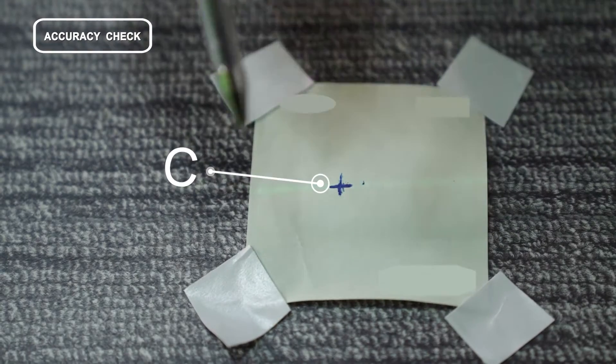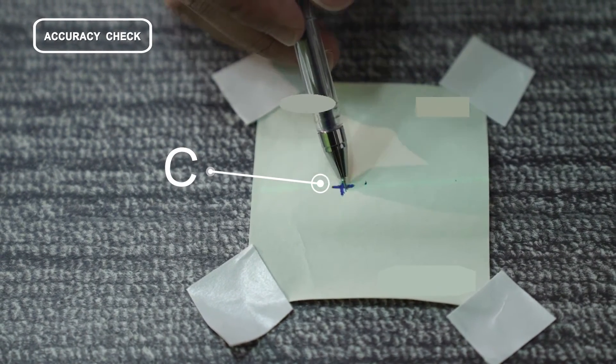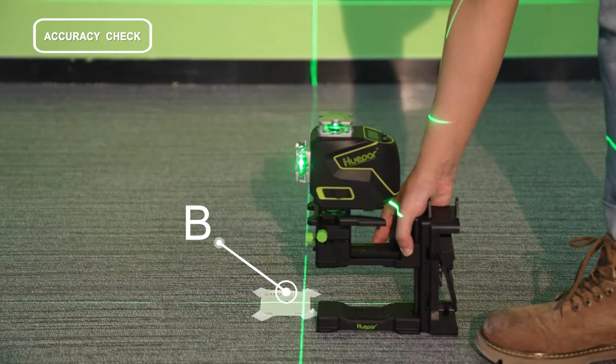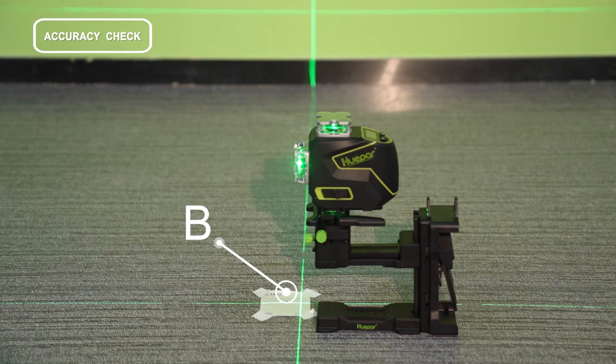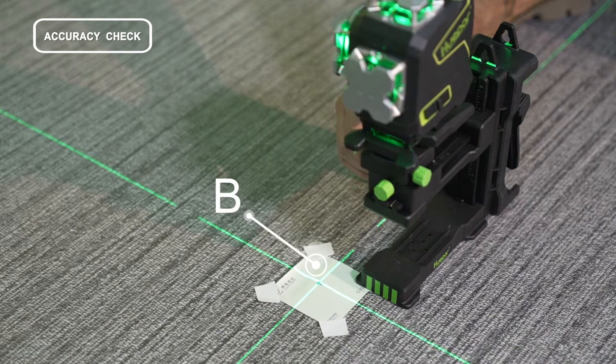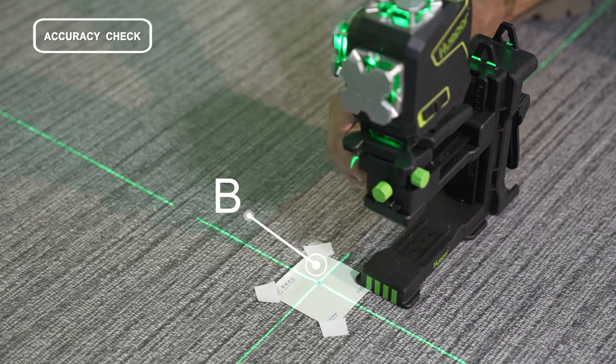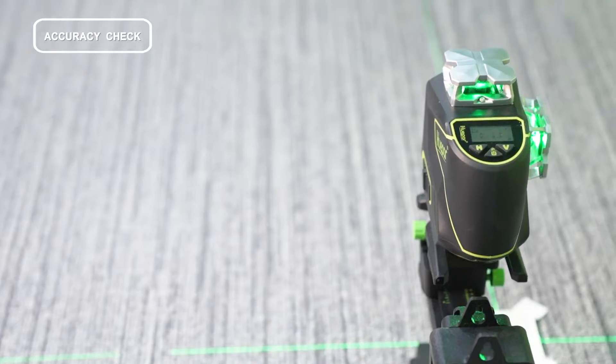Turn on the vertical laser beams of the front laser window and side laser window, and move the laser tool to mark B. Align the cross point at the bottom of the laser tool to mark B accurately, and align the laser beam of the side laser window with mark C.